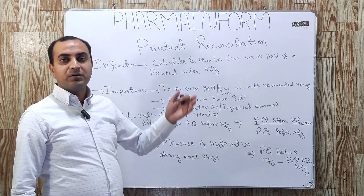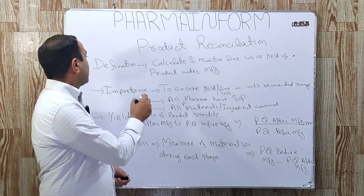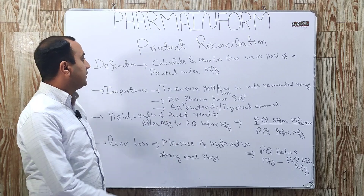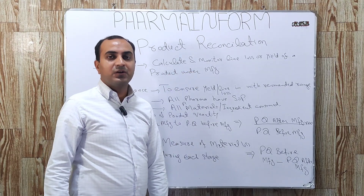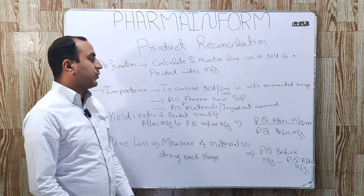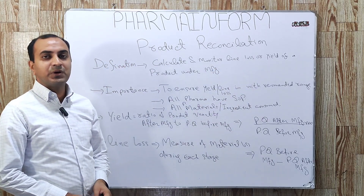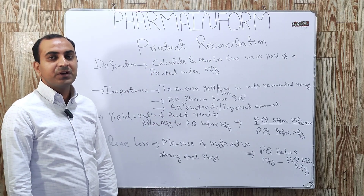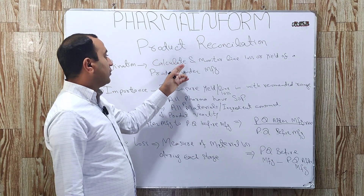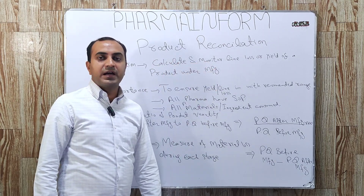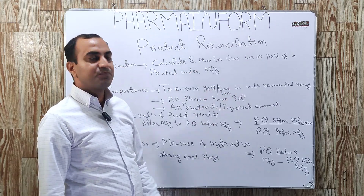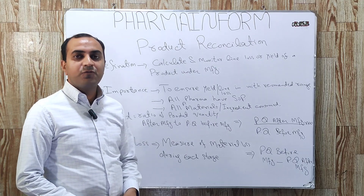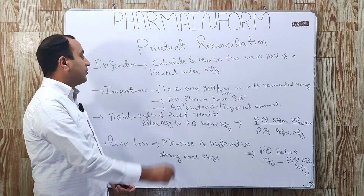So let's start. What is reconciliation? Product reconciliation means to calculate and monitor line loss or yield of a product which is under manufacturing. It is a process used to calculate and monitor line loss or yield of a product which is under manufacturing.